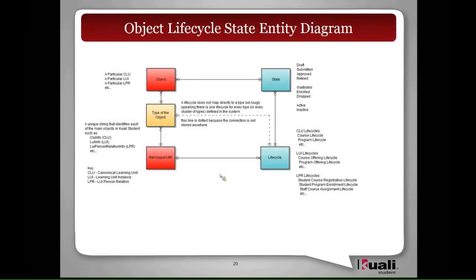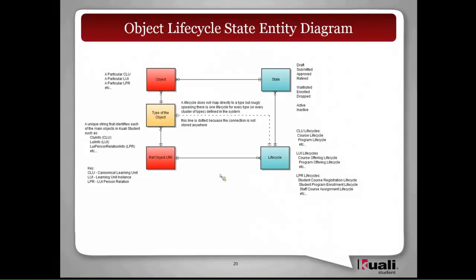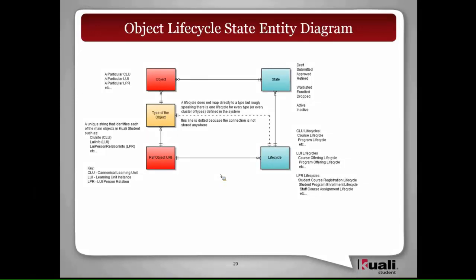For people who understand this stuff visually, I wanted to show the state entity diagram — it shows how all the pieces are logically linked together. The type of the object is loosely connected; there's no real programmatic connection between the type object and the lifecycle. But the ref object URI defines something like a learning unit, a course, or some object in the system, and the actual object is the instance itself, and the lifecycle connects them all together. Feel free to ping me with questions on the diagram later.